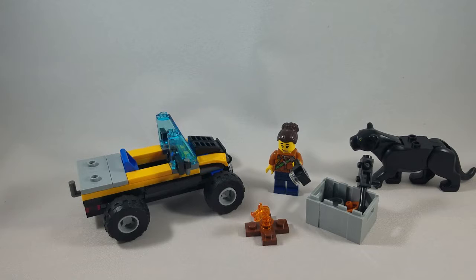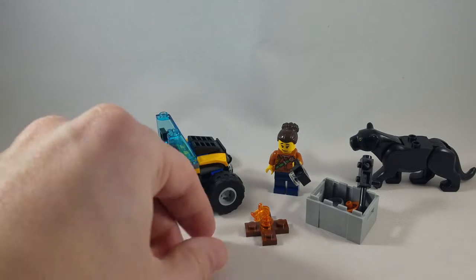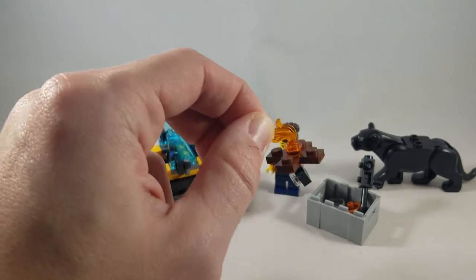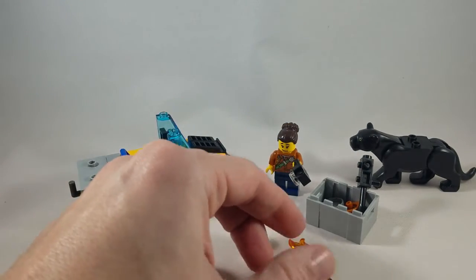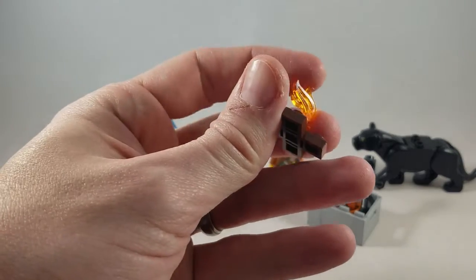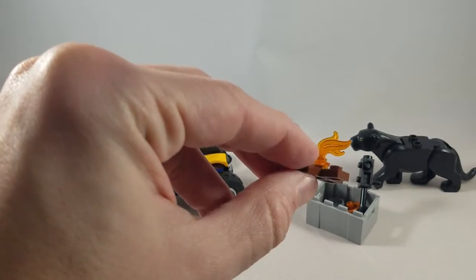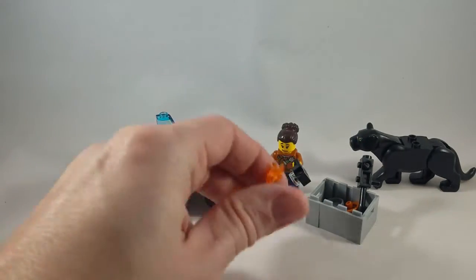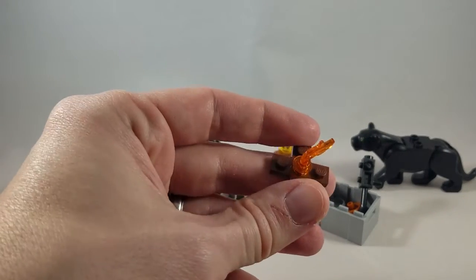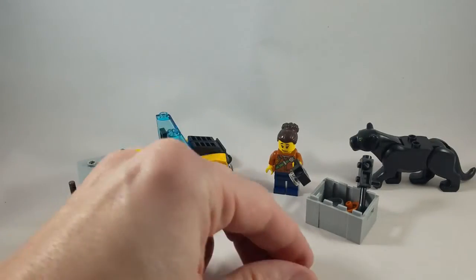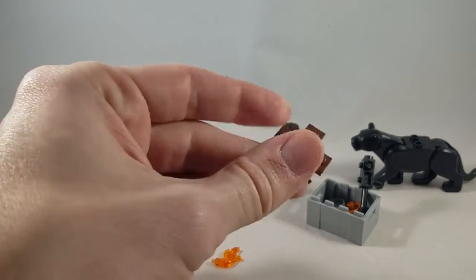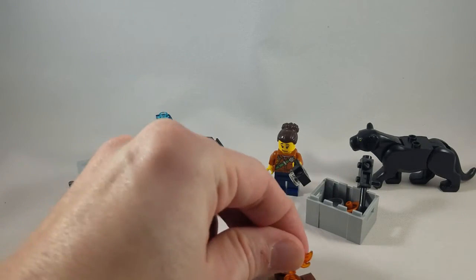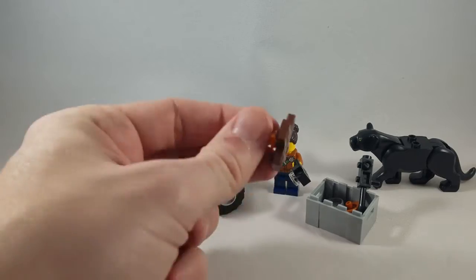For bag number one, you don't actually use any of these stickers. Let's start with bag number one. So bag number one, basically you build the small stuff. One of the first things that you put together is this incredibly small little campfire. You do get an extra one of those flame slash feather pieces in the box, so that's nice just to have an extra one. But I mean, this is nothing. I do like that's the one by one with the hole in the middle, so that's nice.